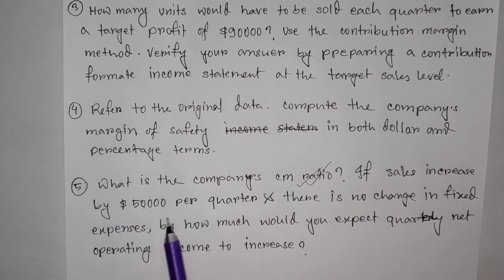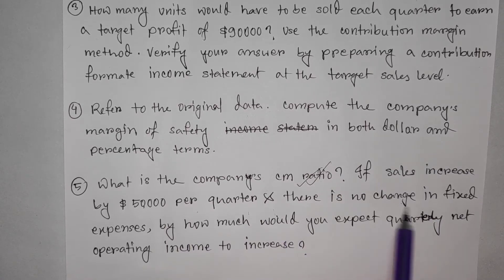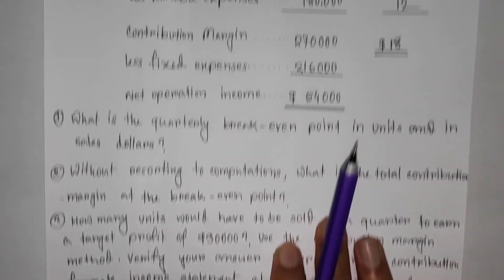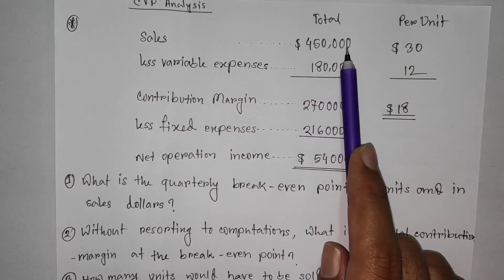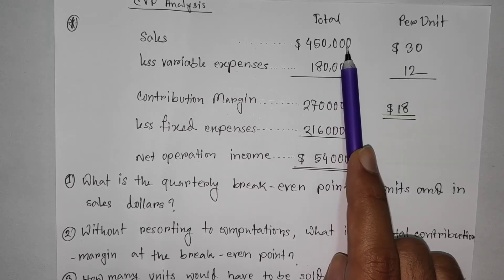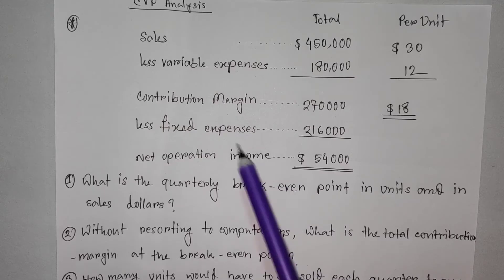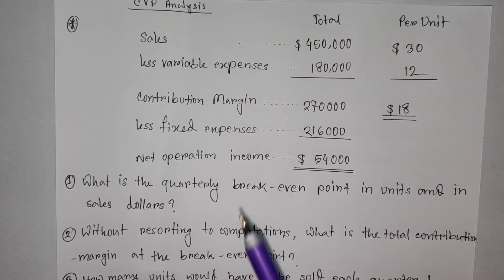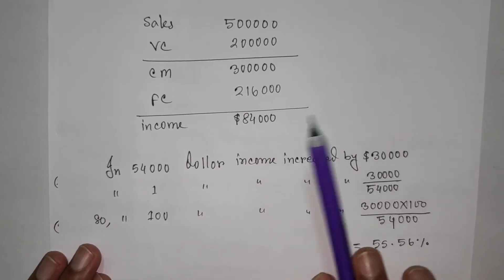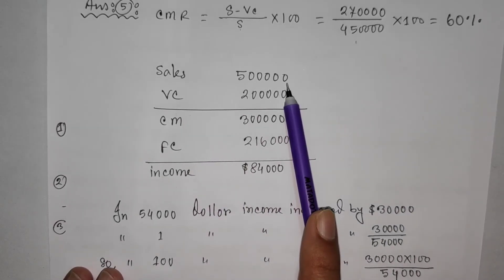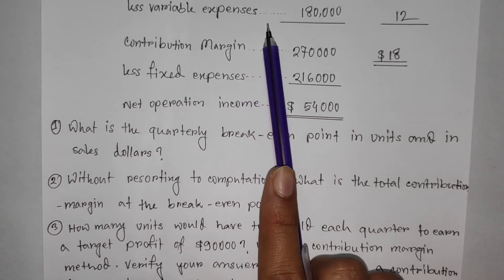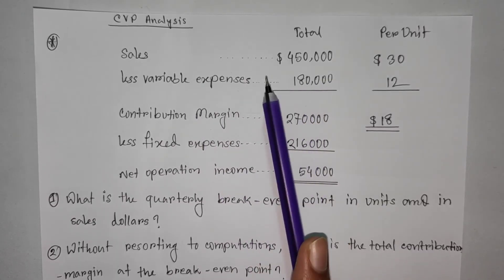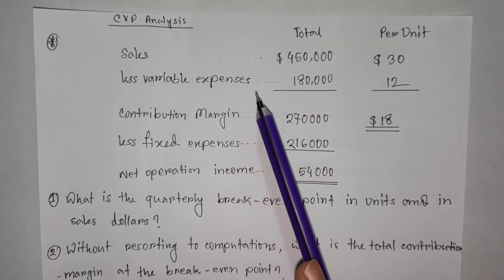If sales increase by $45,000 per quarter, and there is no change in fixed expense, how much would you expect quarterly net operating income to increase? We need the contribution margin ratio to calculate the impact on net operating income from the change in sales. Variable expense ratio is used in this percent calculation.